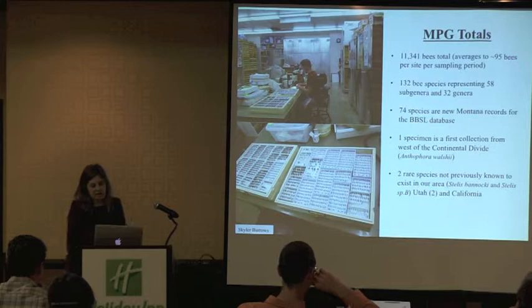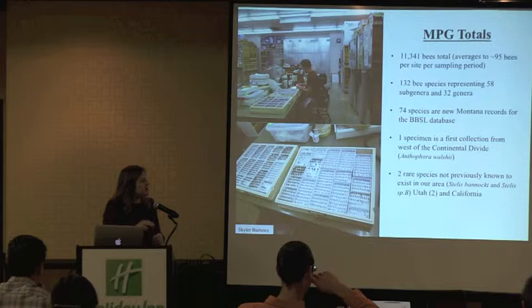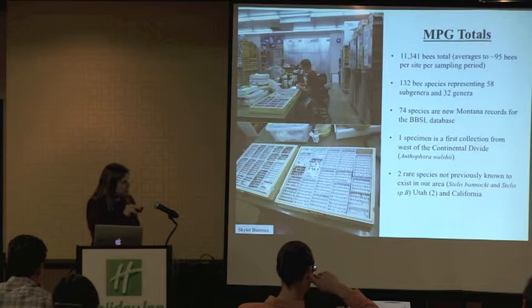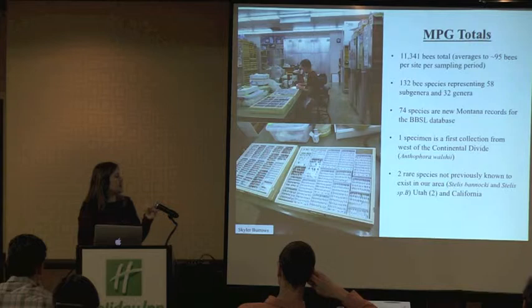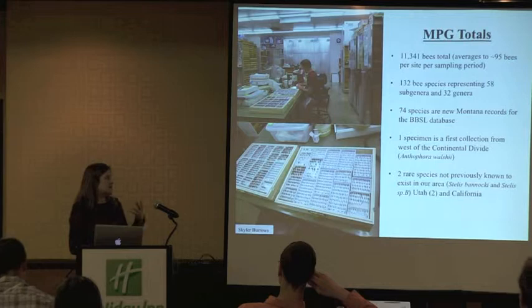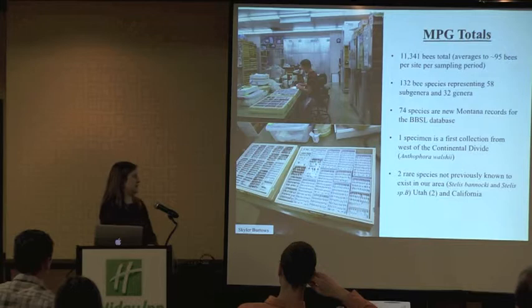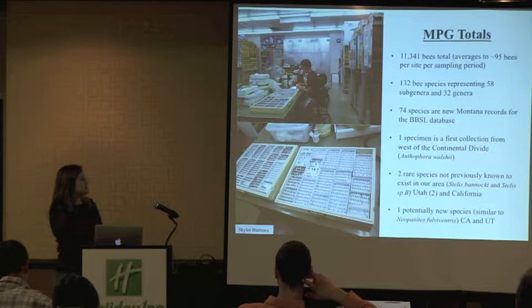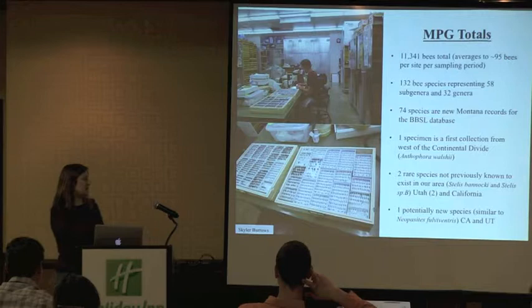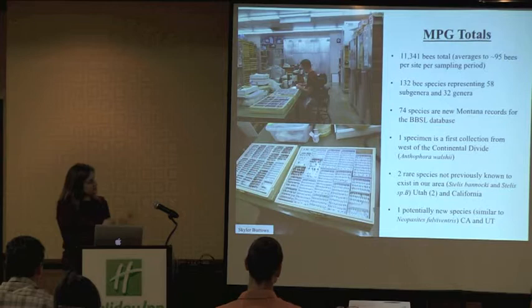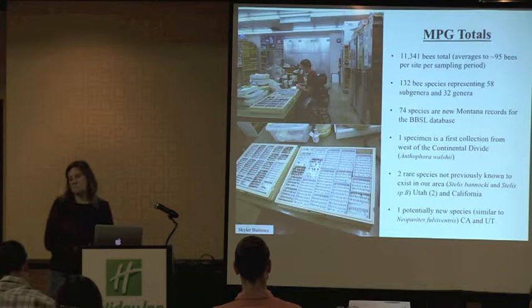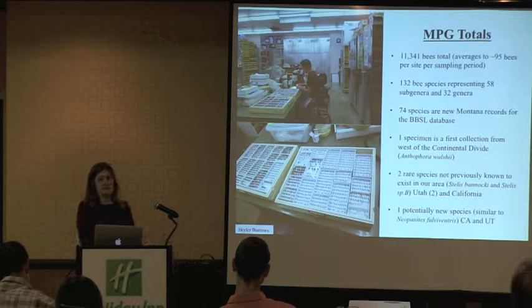Two rare species were caught that weren't previously known to exist in our area — neither is officially described yet. Stelis banakai was previously known from only two individuals collected in Utah; we caught two at MPG, essentially doubling the known collection. Stelis species B had only been known from California before this season. There's also a potentially new species they're calling Neoposites fulva ventris — a little cuckoo bee found in California and Utah — with enough morphological differences that it may be a new species, or at minimum represents an enormous range expansion.